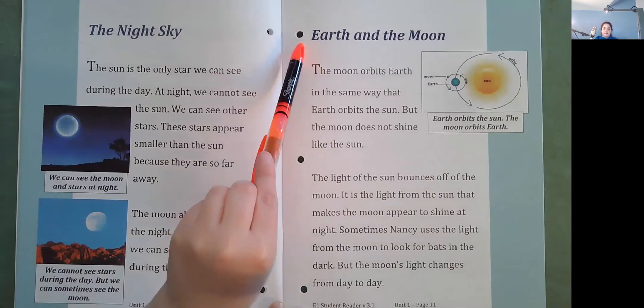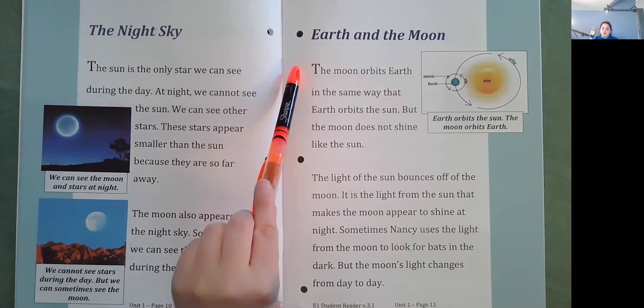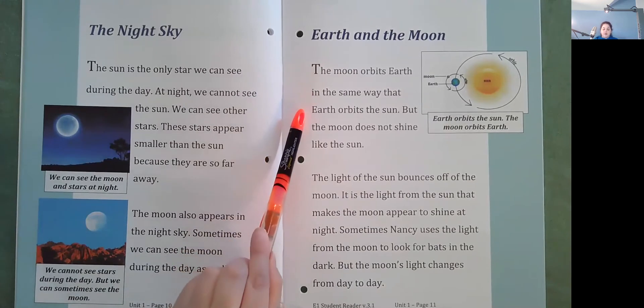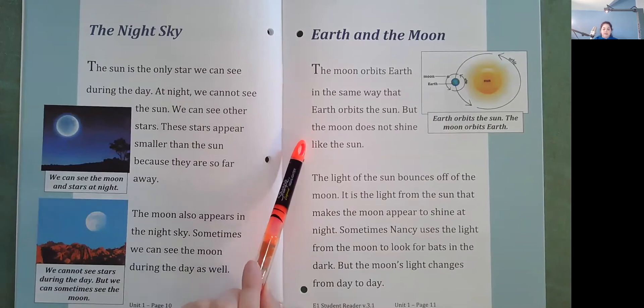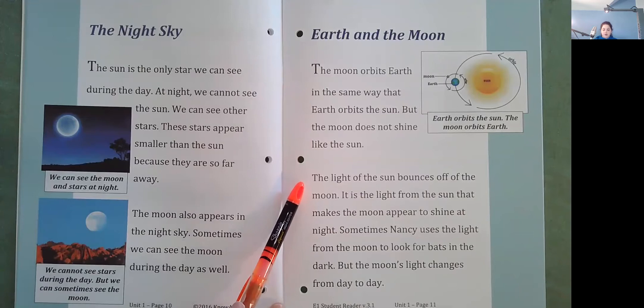Earth and the moon. The moon orbits Earth in the same way that Earth orbits the sun. But the moon does not shine like the sun. The light of the sun bounces off the moon. It is the light from the sun that makes the moon appear to shine at night. Sometimes Nancy uses the light from the moon to look for bats in the dark. But the moon's light changes from day to day.